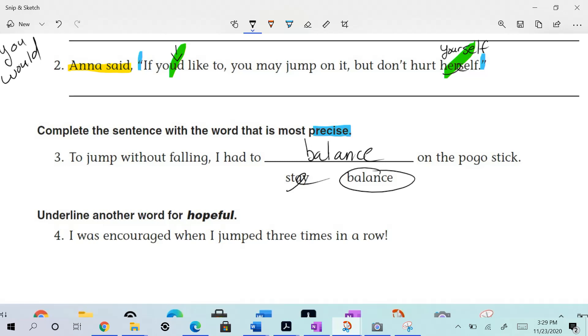Underline another word for hopeful, so we want a synonym, right? Synonym for hopeful. I was encouraged when I jumped three times in a row. What word in that sentence is the same as hopeful? I was encouraged when I jumped three times in a row. What does it mean to be hopeful? Is there another word in there that means that? I think it's I was encouraged, right? Alright, there you have it. Week 13, day one DLR in the books. DLR out.